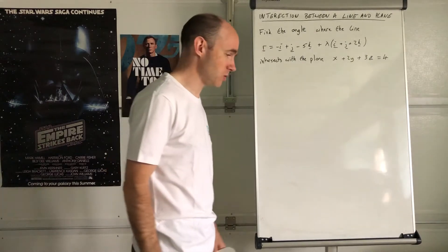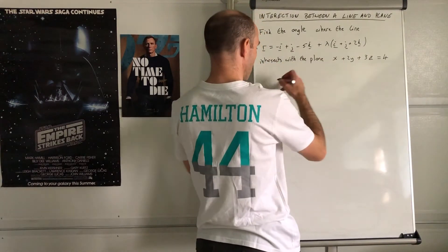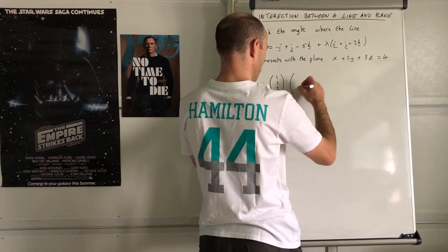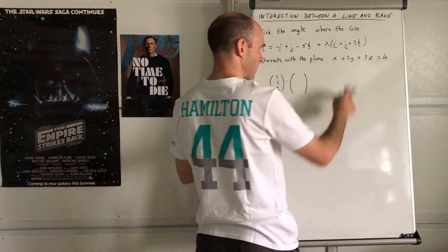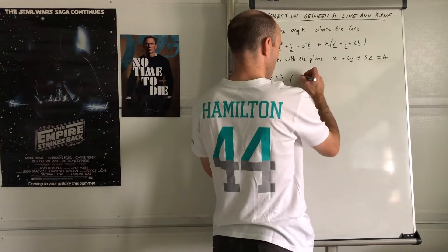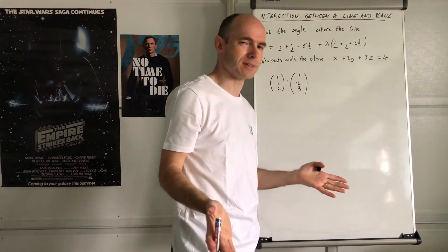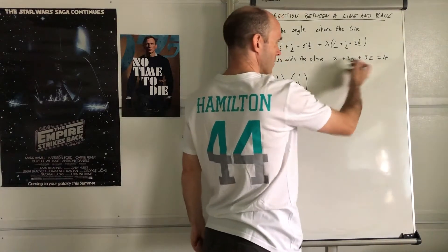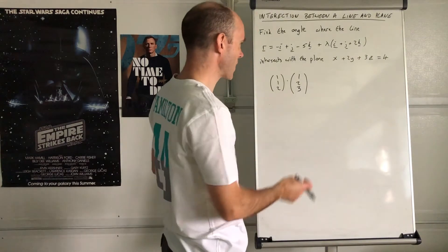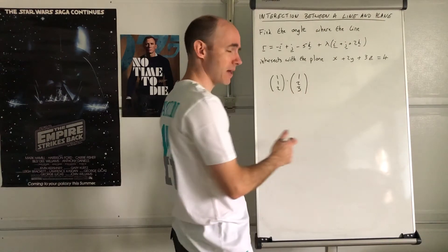The direction vector for the line is (1, 1, 2). For the plane, you use the normal vector - that's ABC from the Cartesian equation, which gives (1, 2, 3). From the Cartesian equation, that's all you've got: the normal to the plane. What we're doing is working out the angle between the actual direction of the line and the normal to the plane.